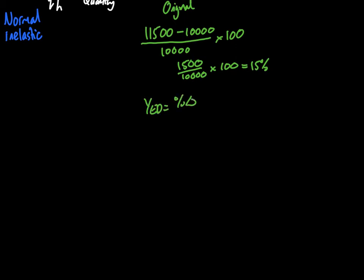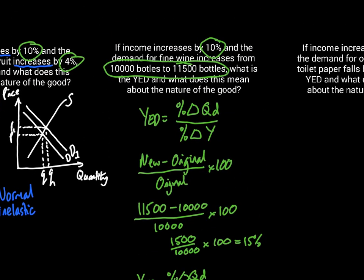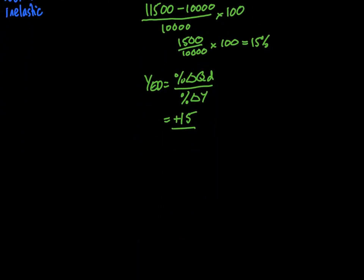Now I can go back to my formula for YED. My percentage change in quantity demanded divided by my percentage change in income. My percentage change in quantity demanded is 15 because I've just calculated that. And that's an increase. This was based on an increase of 10% in income, which means I have a YED of 1.5. A YED of 1.5 can be interpreted as elastic and normal, which means that this good would be considered a luxury. In other words, when incomes increase, demand increases proportionally more.